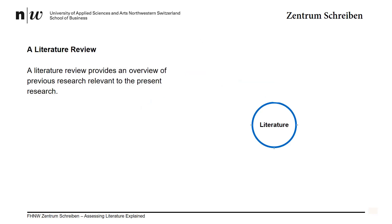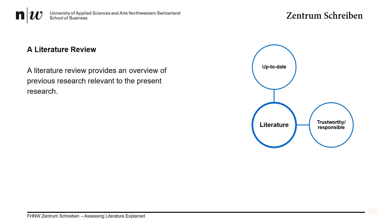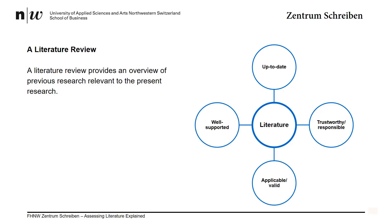A literature review provides an overview of previous research relevant to the present research. It should be up-to-date, trustworthy, responsible, applicable, valid and well supported. In this tutorial we'll focus on the first two points: whether or not literature is up-to-date and whether it's trustworthy and responsible.